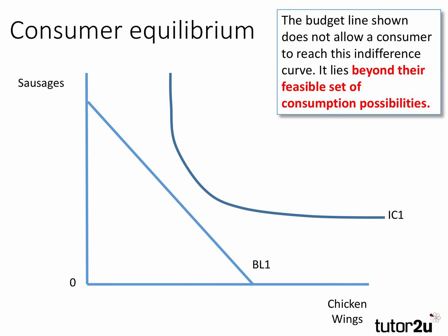In our example, a customer faces a simple choice between consuming sausages and chicken wings. IC2 is an indifference curve — combinations on that curve the consumer is indifferent between. It's convex to the origin because of diminishing marginal utility, but the consumer can't reach IC1 because the budget line, determined by incomes and prices, doesn't allow them to reach any of those combinations shown. So IC1 lies beyond the consumer's feasible set of consumption possibilities.